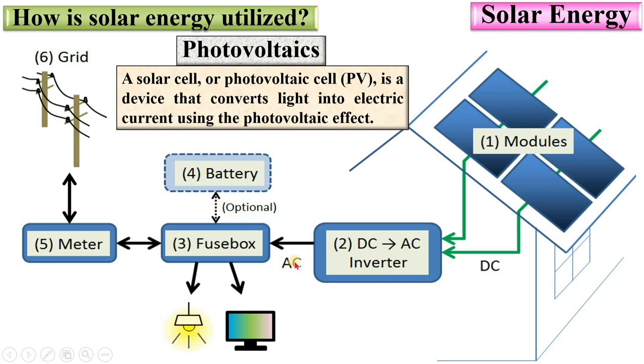If you want to store the AC current, then you can put a battery. This is optional, or you can directly send the AC with the help of the meter to the grid line.